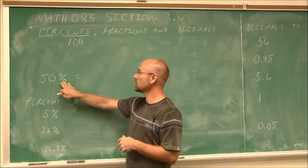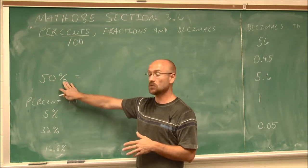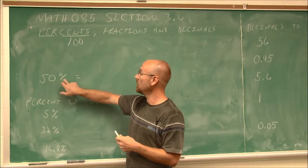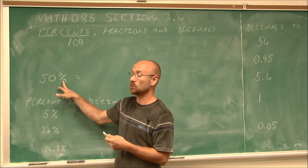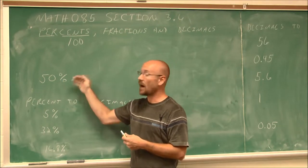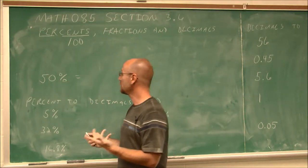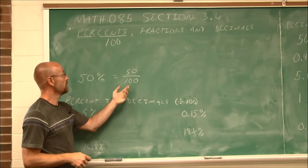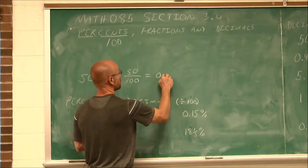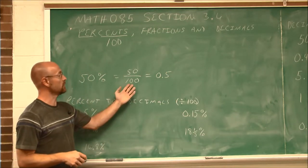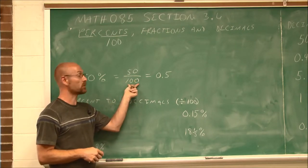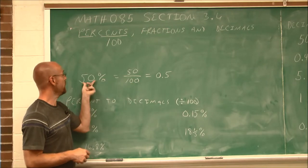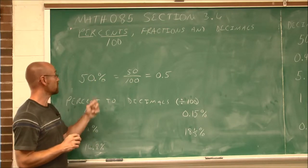So 50% is saying 50 is being divided by 100. If we want to convert that to a decimal, we can simply divide by 100. And since 100 is two factors of 10, we can just move the decimal point two spots to the left instead of doing long division.